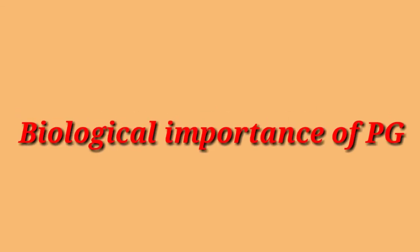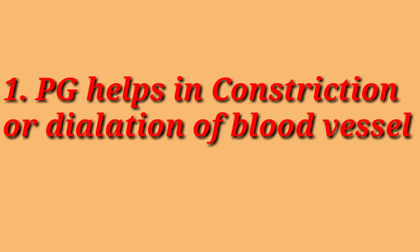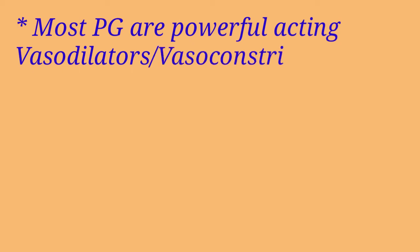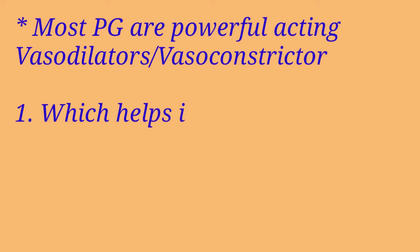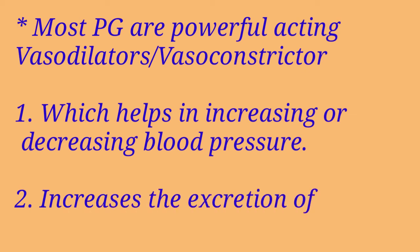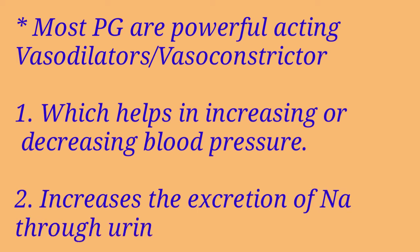Now we will move on to the second part of this lecture: the biological importance of prostaglandin. Prostaglandin helps in constriction or dilation of blood vessels. Most prostaglandins are powerful locally acting vasodilators or vasoconstrictors. Vasodilation occurs when muscles in the walls of blood vessels relax so that the vessel dilates, creating less resistance to blood flow and allowing blood flow to increase, which in turn decreases blood pressure.